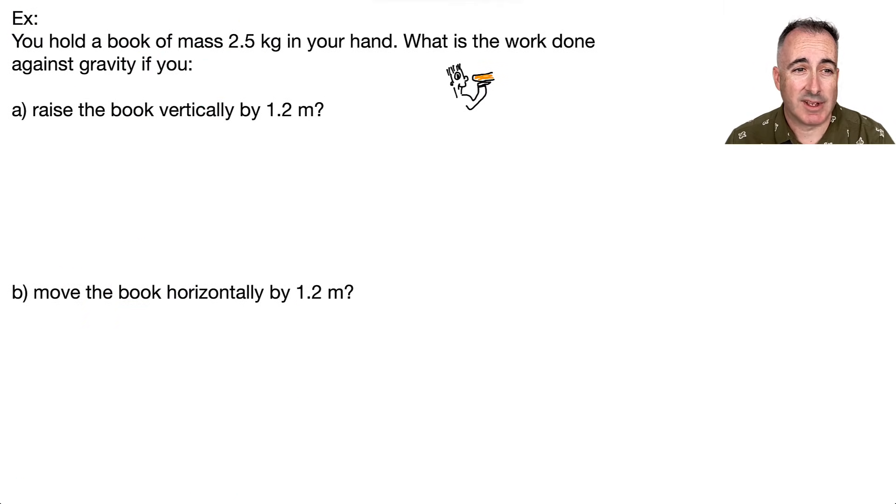Let's look at an example. Assume that you have a book of mass 2.5 kilograms in your hand. We've got two different parts: what is the work done against gravity if you raise the book vertically 1.2 meters, and if you move it horizontally 1.2 meters.